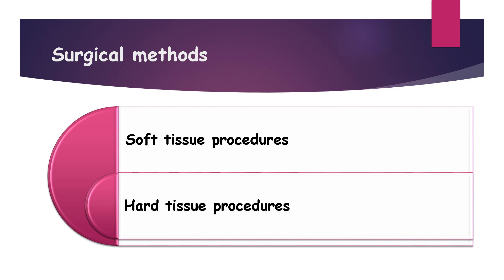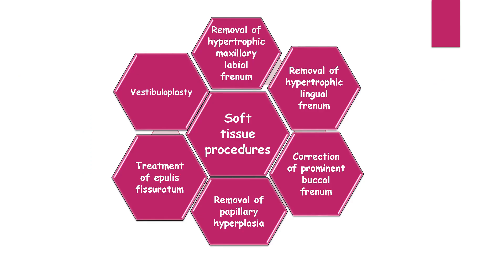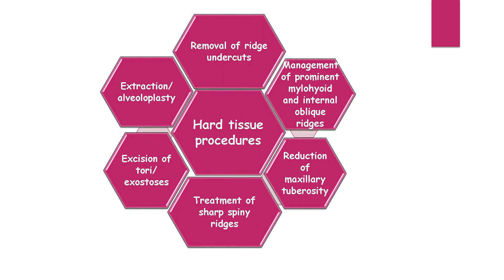The surgical methods include soft tissue procedures and hard tissue procedures. Soft tissue procedures discussed in the previous video include removal of hypertrophic maxillary labial frenum, lingual frenum, correction of prominent buccal frenum, removal of papillary hyperplasia, treatment of papillary fibratum, and vestibuloplasty, which will be dealt with in a separate section. Today we will discuss hard tissue procedures in detail.